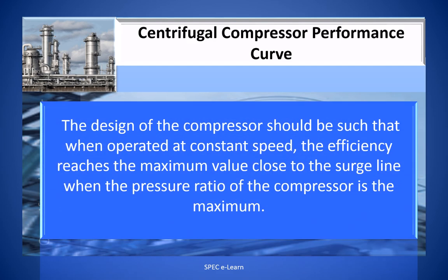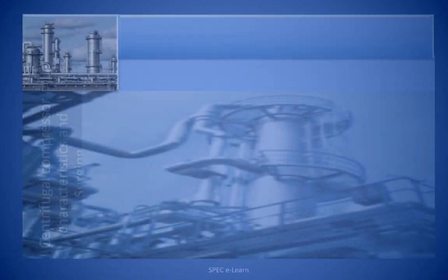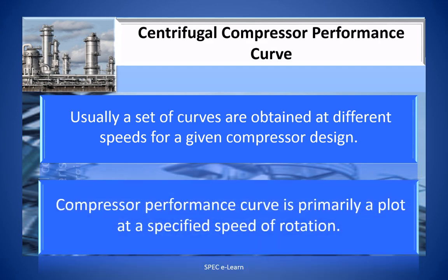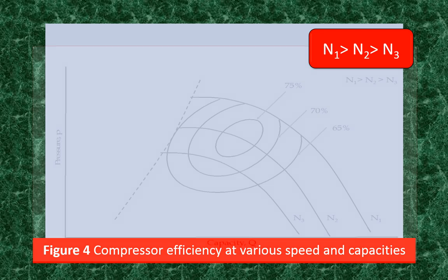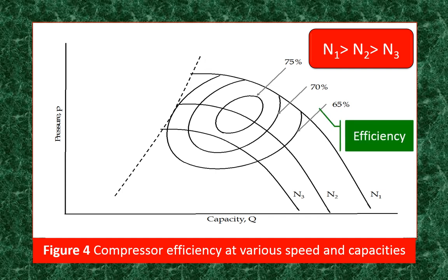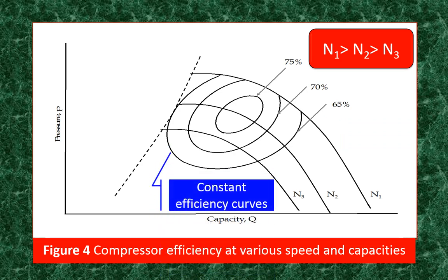The design of the compressor should be such that when operated at constant speed, the efficiency reaches the maximum value close to the surge line when the pressure ratio of the compressor is maximum. Usually, a set of curves are obtained at different speeds for a given compressor design. Compressor curve is primarily a plot at a constant speed of rotation. This figure illustrates the compressor performance curves of head versus capacity at different speeds N1, N2, and N3. As the speed decreases, the head flow becomes smaller. Also shown are the constant efficiency curves on the same plot. The compressor selection is such that the operating point of pressure versus flow falls in the highest possible efficiency region for a given speed.